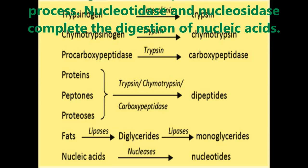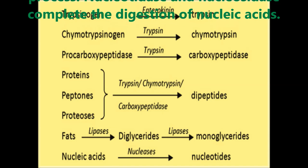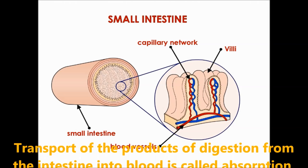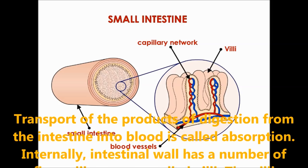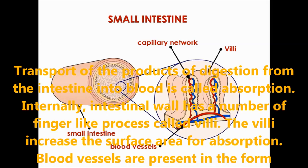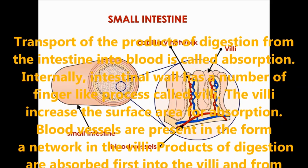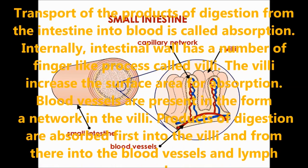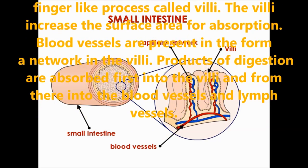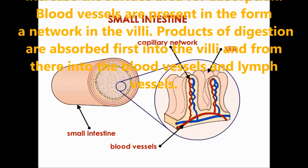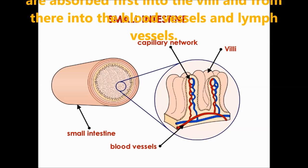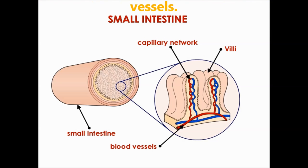The end products of digestion are absorbed in the intestines. Absorption means the transport of products of digestion from the intestine into the blood through the walls of the intestine. Internally, the intestinal wall has a number of finger-like projections called villi, which increase the surface area for absorption. Blood vessels and lymph vessels are present in the form of a network in the villi, and the products of digestion are absorbed first into the villi and from there into the blood vessels and lymph vessels.